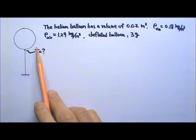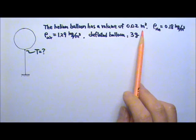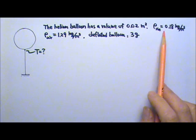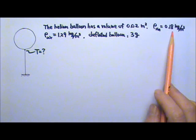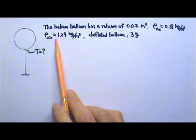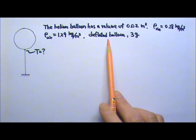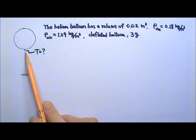The helium balloon has a volume of 0.02 cubic meters. The density of helium inside is 0.18 kilograms per meter cubed. The density of the air outside is 1.29 kilograms per meter cubed. The balloon, when deflated, has a mass of 3 grams. Find the tension in the string right over here.